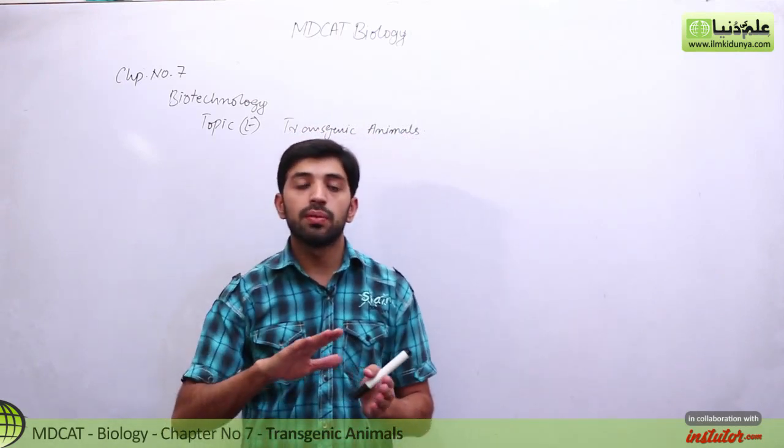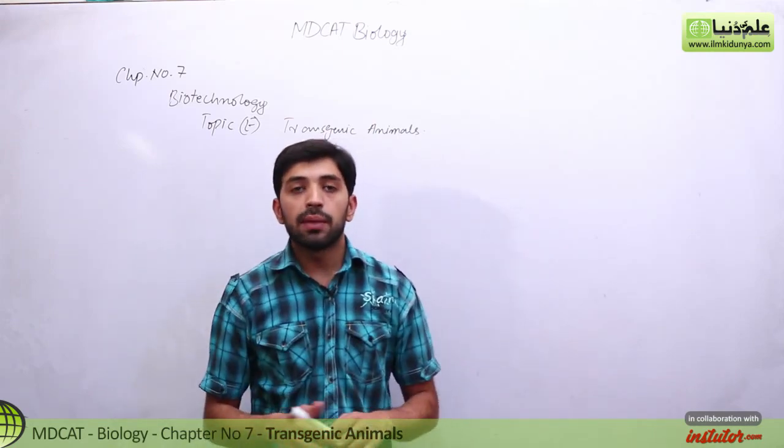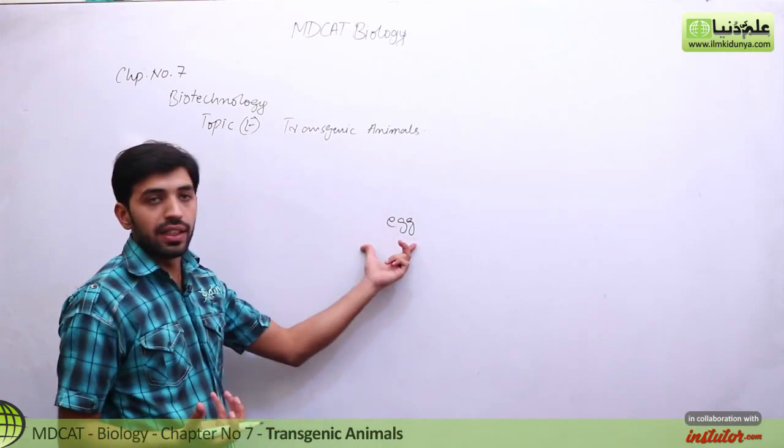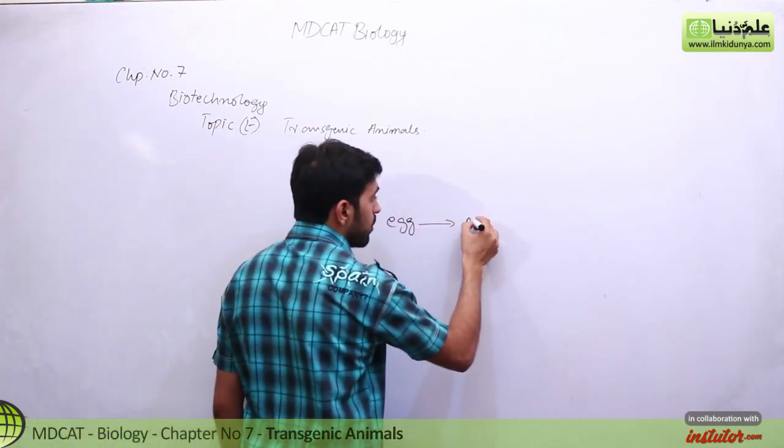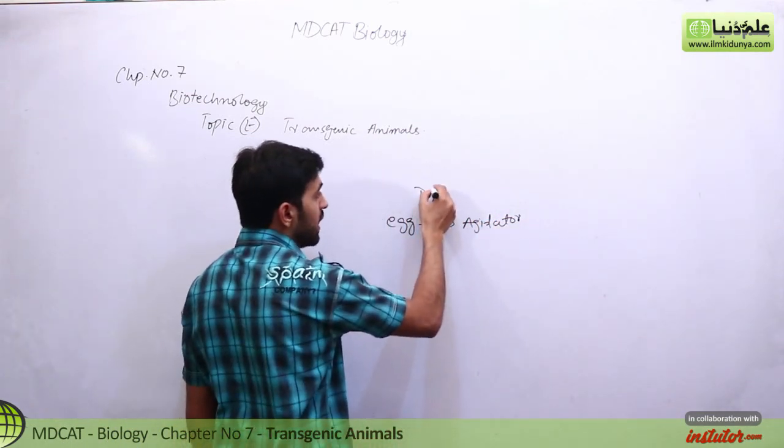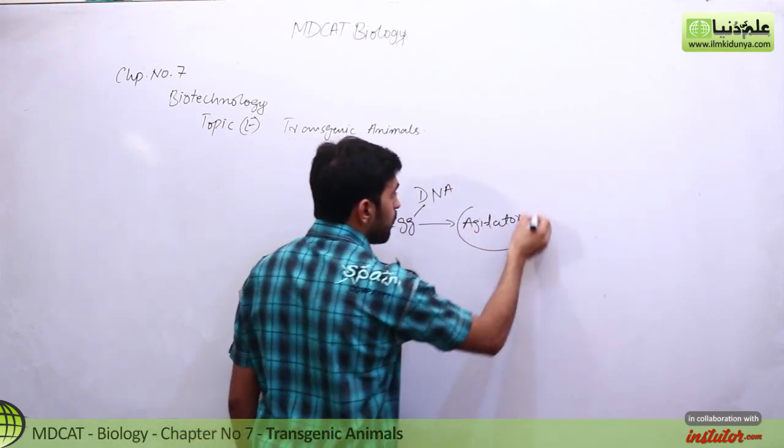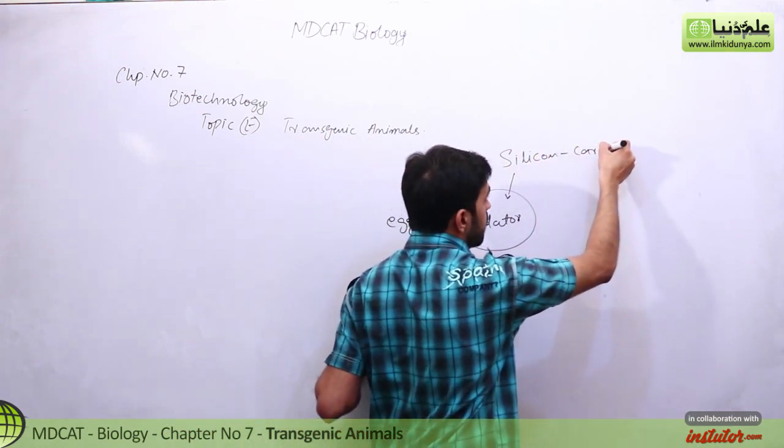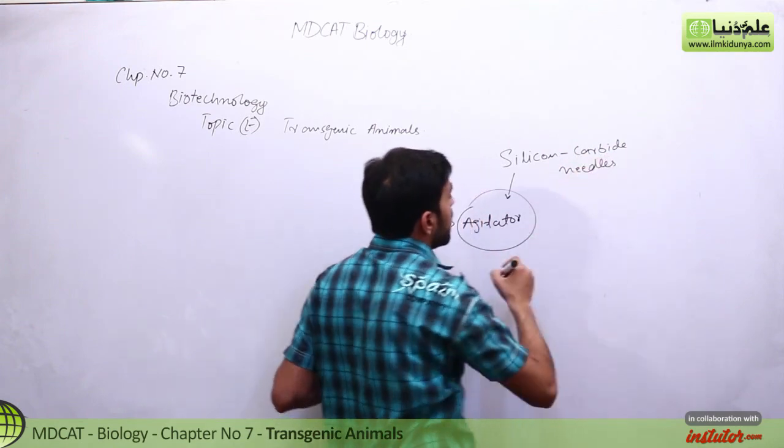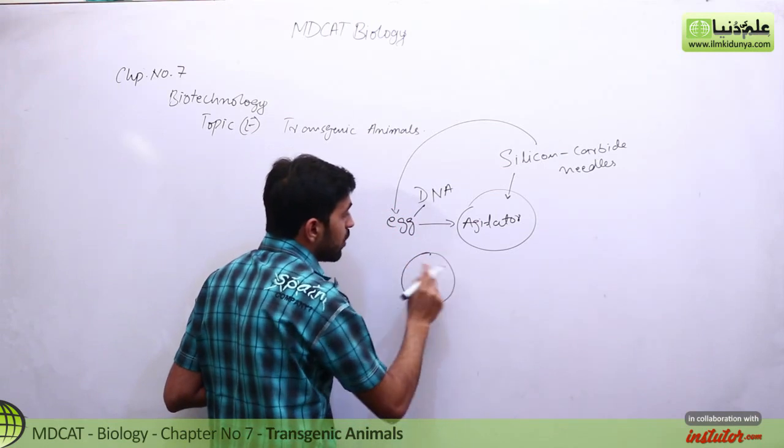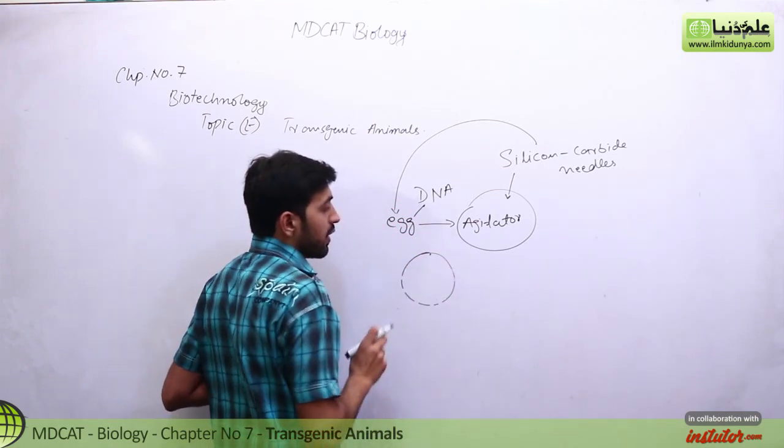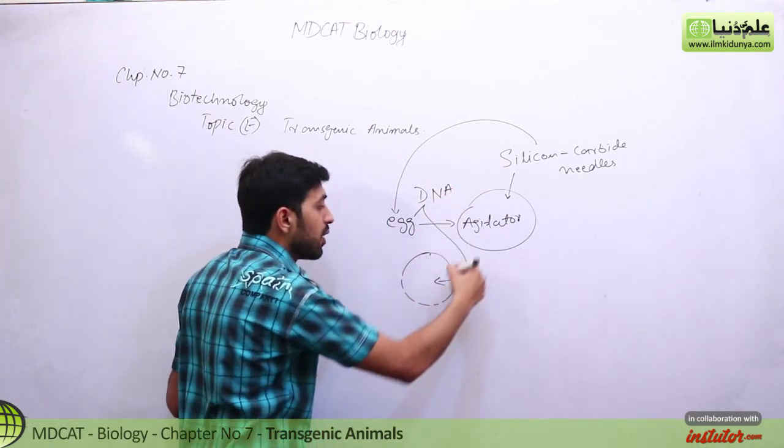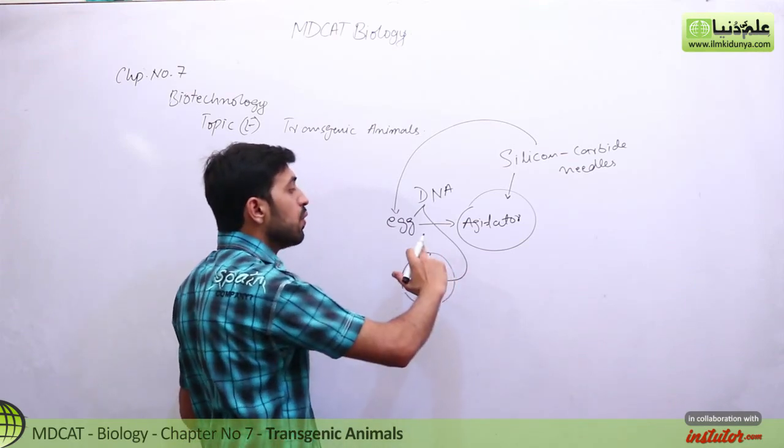In micro injection, DNA is injected into the host organism. The Vortex Method works this way: we have the egg required, we have the donor egg, and we place it in an agitator along with DNA. When it's placed in the agitator, and after fertilization, we have new products obtained.